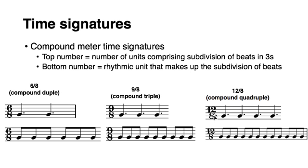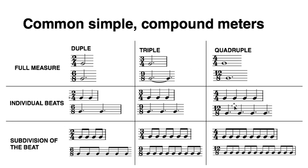And in 12/8, you have a compound quadruple. You have 12 eighth notes per bar, but you have 4 beats, 4 dotted quarter notes per bar, each one of them a beat. Here's a quick view of some of the most common simple and compound meters and their time signatures.